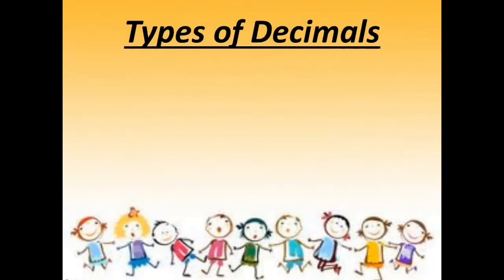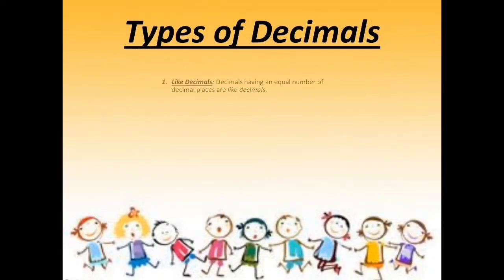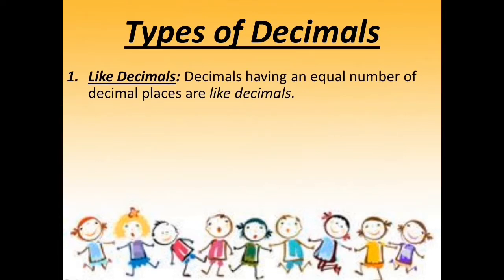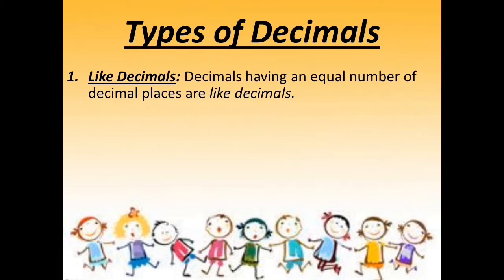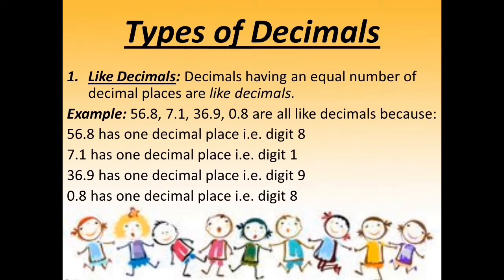Next is types of decimals. The first type is like decimals. Decimals having an equal number of decimal places are like decimals. For example, 56.8, 7.1, 36.9, and 0.8 are all like decimals because each has one decimal place — digit 8, digit 1, digit 9, and digit 8 respectively. Hopefully it is clear to you.